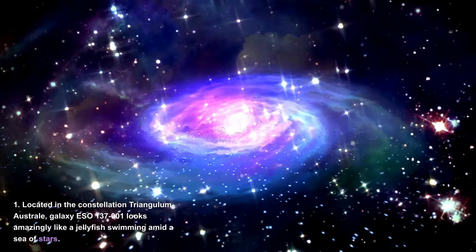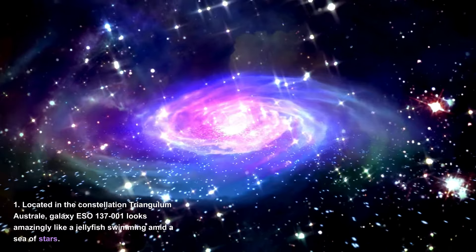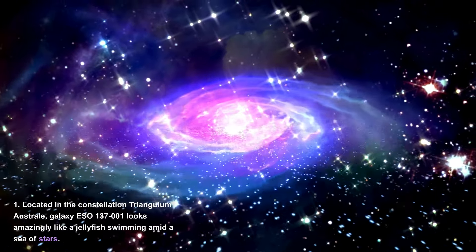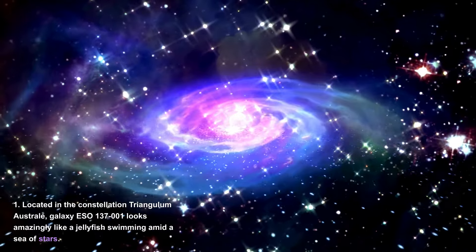Located in the constellation Triangulum Australe, galaxy ESO 137-001 looks amazingly like a jellyfish swimming amid a sea of stars.